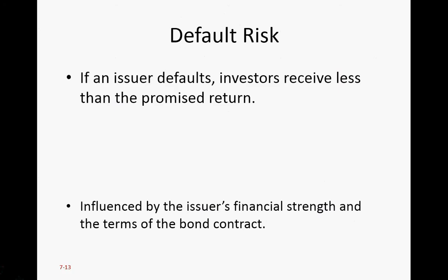Now let's talk about the default risk. Default basically means the firm is unable to pay off its debt obligations. So if you're an investor of the bond, when the firm is unable to pay the coupons and the face value, your money cannot get back. That's called the default. In a corporate scenario, this is called a bankruptcy.